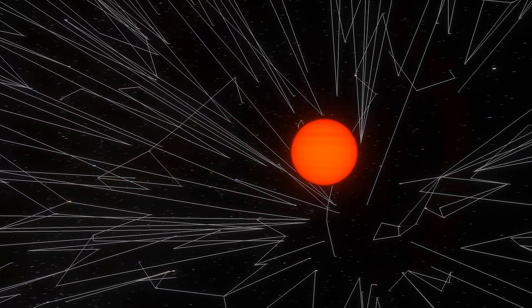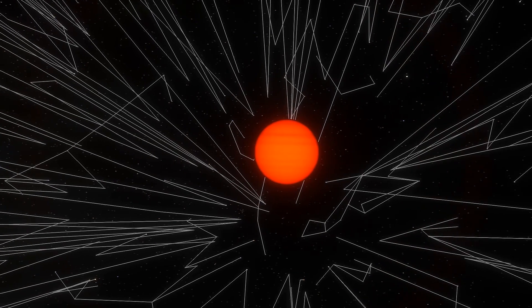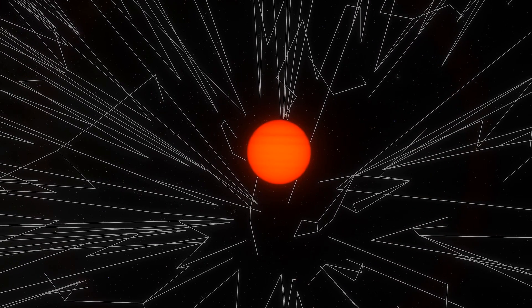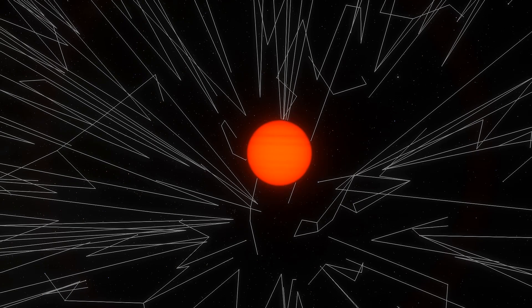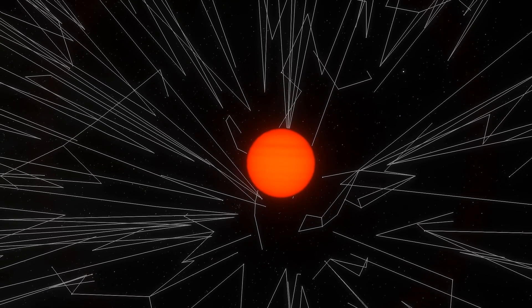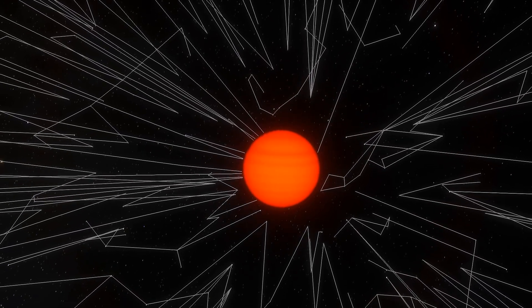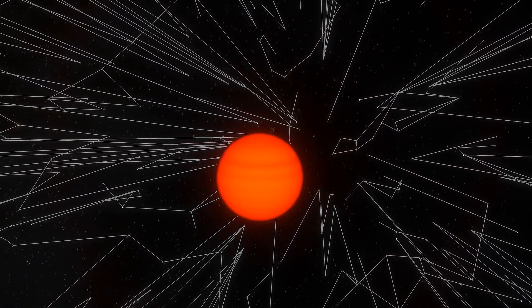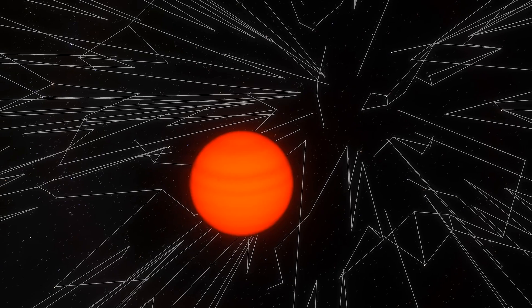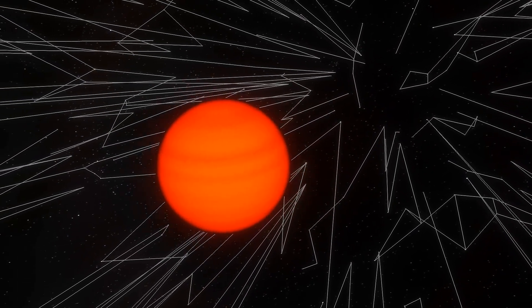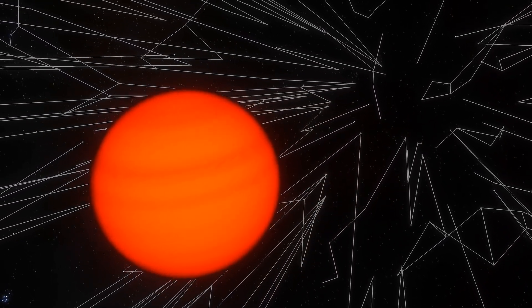PSO J318 is a bit bigger than Jupiter, but is actually 6.5 times more massive than our neighborhood giant. Nevertheless, PSO J318 is a quite long way from being a hydrogen fusing star. In mass, at least. Size-wise, however, this rogue planet is actually potentially larger than the star of our next destination. Again, potentially larger, but nowhere near as massive.